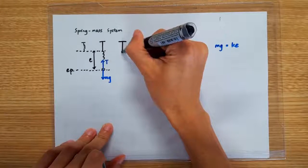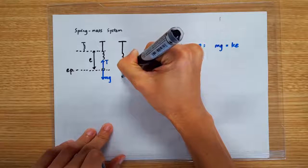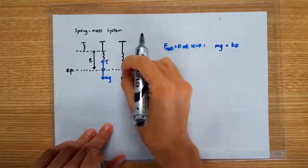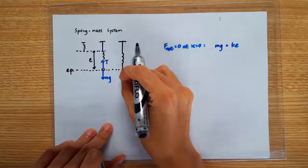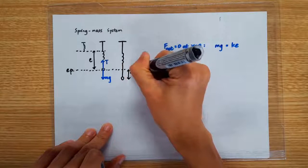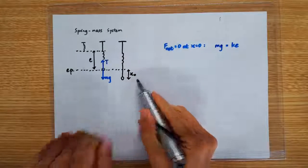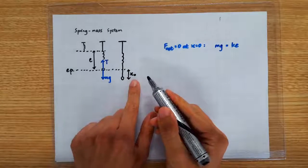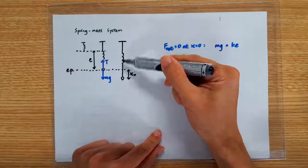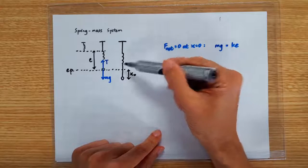Let's say we now stretch the spring even further — meaning I pull the spring down to a further extension of x0. And if I let go, this is going to go into oscillation with an amplitude of x0.